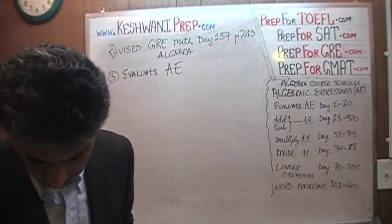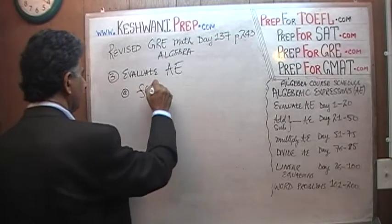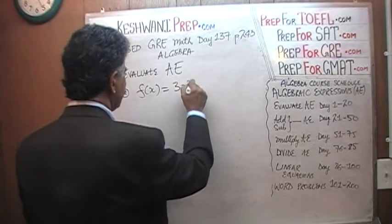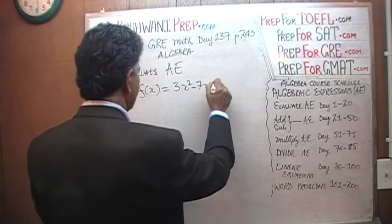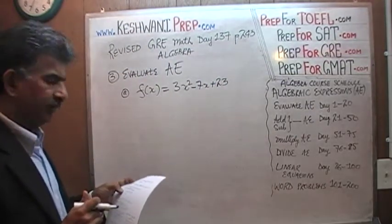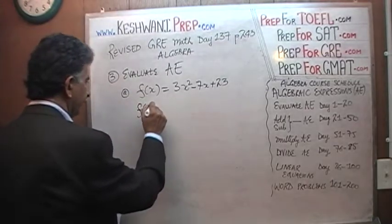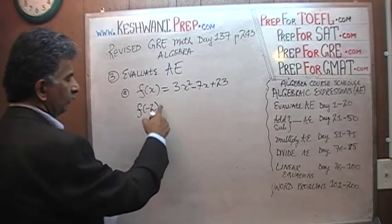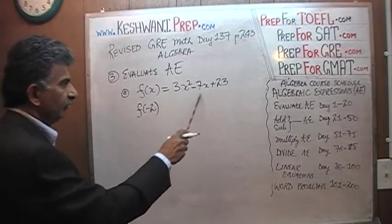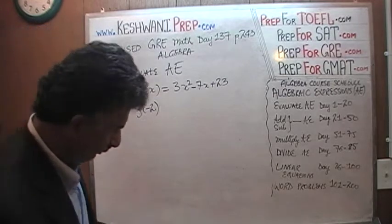Let's take a look at the very first one. The question says to evaluate an algebraic expression. We are told that f(x) equals 3x squared minus 7x plus 23, and we are asked to find the value of this expression when x equals negative 2. So we go through our expression, and wherever we see x, we replace it with negative 2 and just evaluate. That's all — very simple.